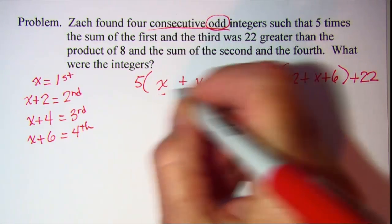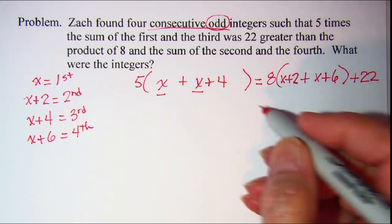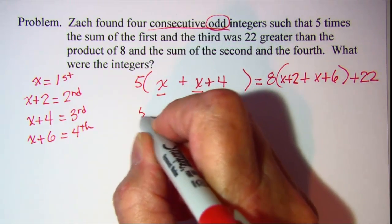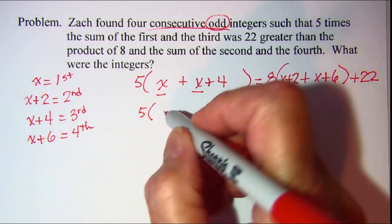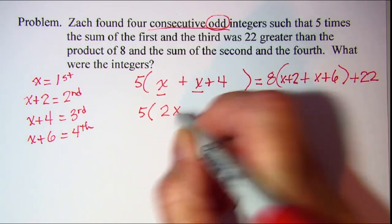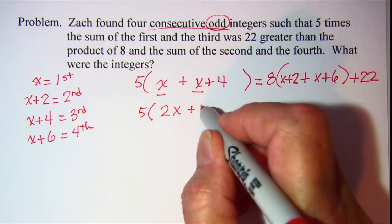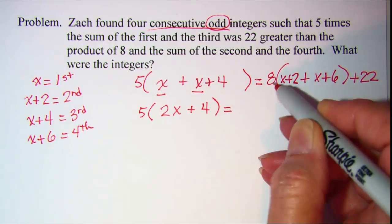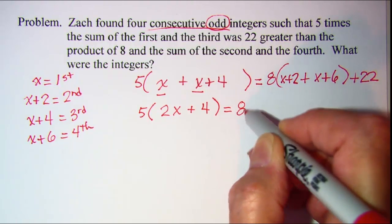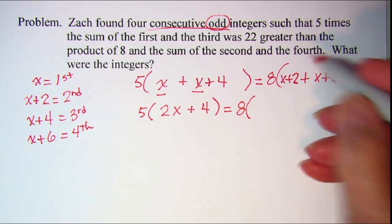Let's combine terms on the left side here inside the parentheses. So I have 5 times the quantity x plus x is 2x and then just copy plus 4 close up my parentheses equals 8 times the quantity.